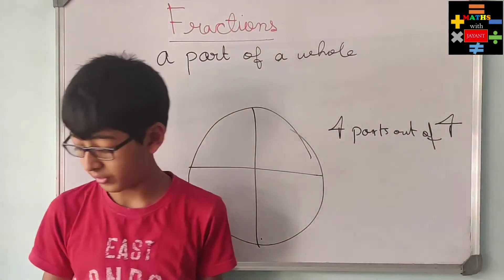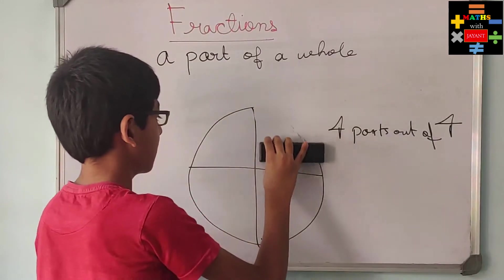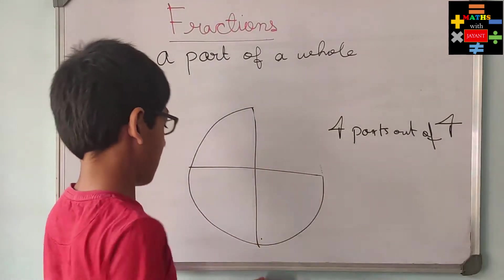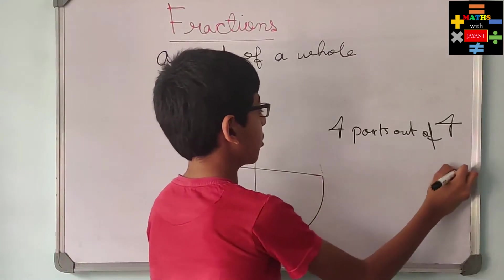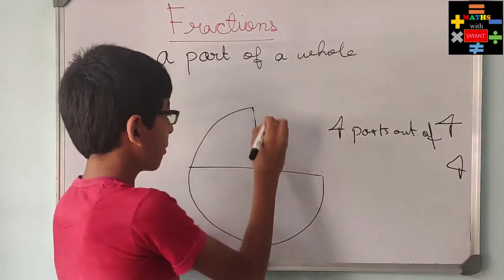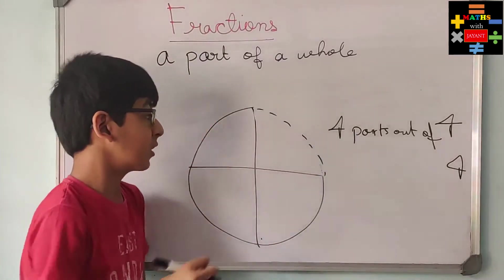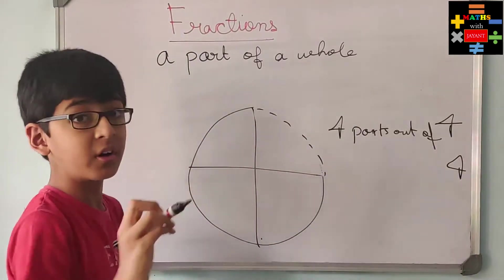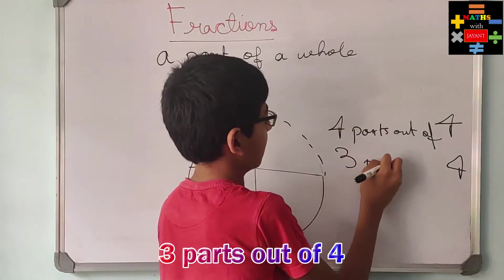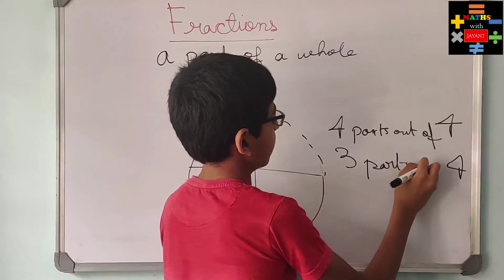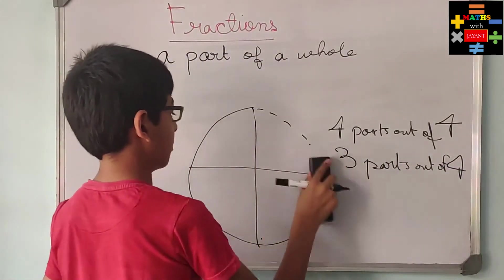Now suppose if one slice I give to my mother. So now how many parts am I left with? The total parts it was divided into was four. It was divided totally into four parts, but we have only three parts out of four right now. So this is three parts out of four.